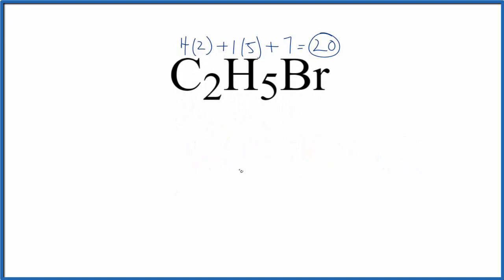We'll put the carbons in the center of our structure. The hydrogens, they always go on the outside, and since the carbon is less electronegative than the bromine, it makes sense for it to be on the inside of our Lewis structure. That'll look like this.